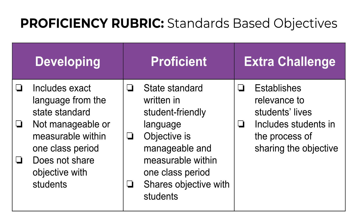You'll notice there's an extra challenge column that is 100% completely optional, but it's there for all you go-getters wanting to go above and beyond. These extra challenge criteria are intended to help you move towards the master's level proficiency ranking when you are really being evaluated by your principal or assistant principal. Our extra challenges for this video module are to establish the relevance to students' lives — meaning why is this important or how does it relate to their future — and to include students in the process of sharing the objective. Maybe you have them read a part of the objective or ask them what they think they'll need to be able to do. This proficiency rubric content is extremely important as it relates to ultimately how you will be assessed.